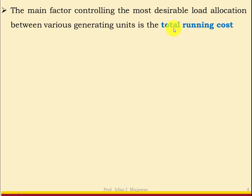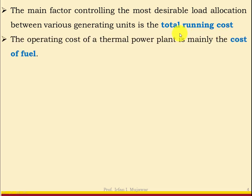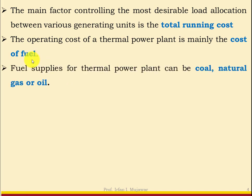We should always try to have minimum running cost or operating cost. The operating cost of a thermal power plant is mainly the cost of fuel. Our main discussion is based on the thermal power plant. Fuel supplies for thermal power plants can be coal, natural gas, or oil — these are the commonly used fossil fuels to generate electricity.